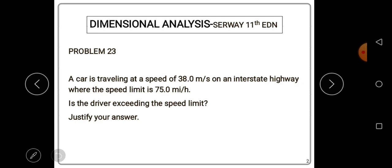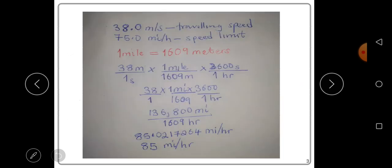changing that, we'll be able to compare with the speed limit, which is 75.0 miles per hour. So let's do that. The traveling speed is 38.0 meters per second. The speed limit is 75.0 miles per hour. Now we have to convert meters per second into miles per hour. How do we do that?